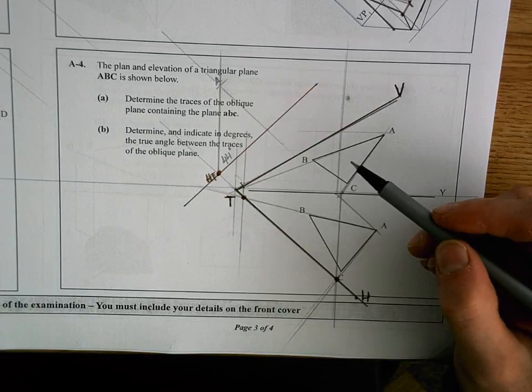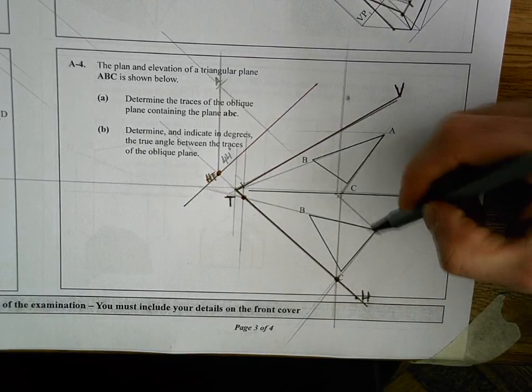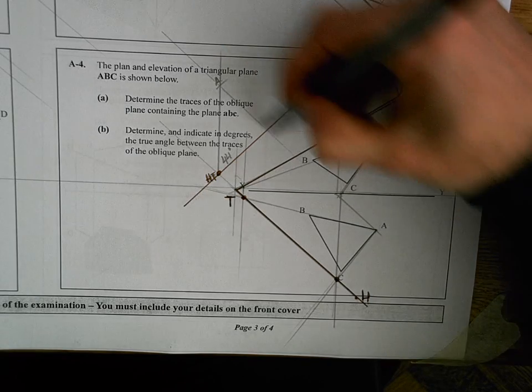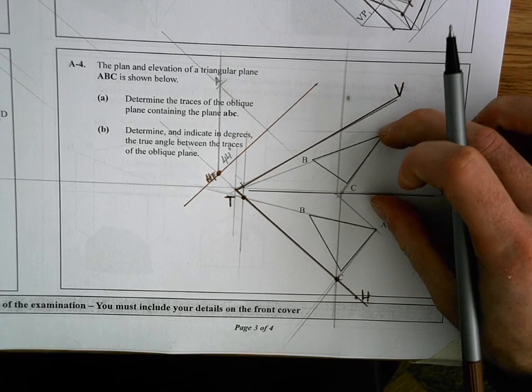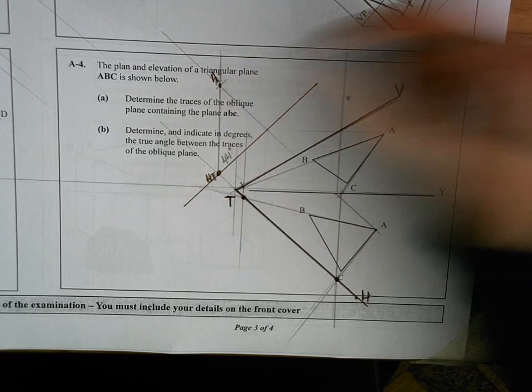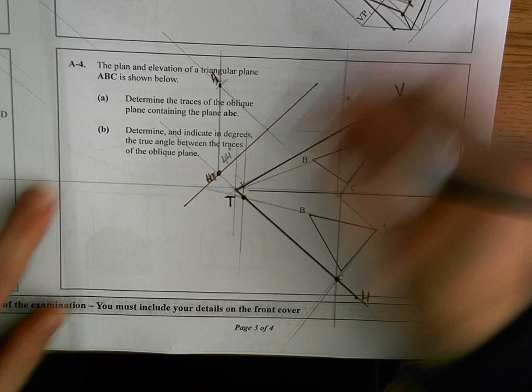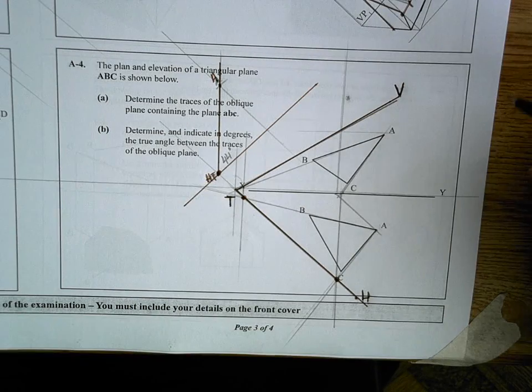I went for point A just because it was the highest one. So I'm bringing point A up to my auxiliary view. I'm getting the height from the elevation. I'm marking off the height. That's point A in the auxiliary. And what that will leave me with is an edge view of my oblique plane.